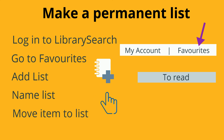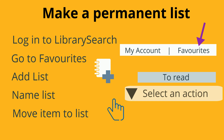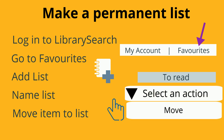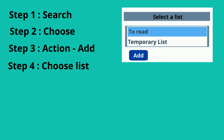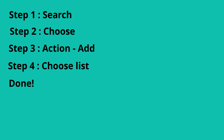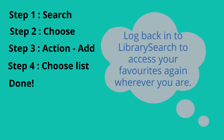You can do this with a drag-and-drop option, or by using a drop-down menu. Once you've got your list set up, the final step becomes to choose which list you want to add things to. Then you're done. You can log back into LibrarySearch at any time to access your favourites again, wherever you are — a convenient way to go back to those books and articles you need for your studies.